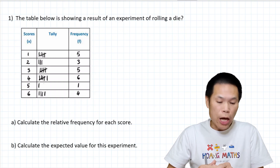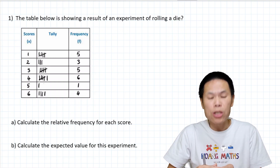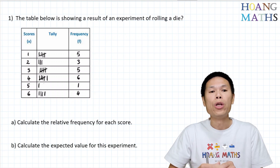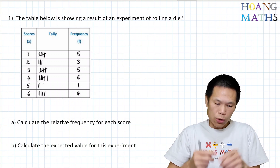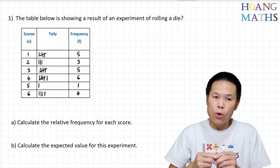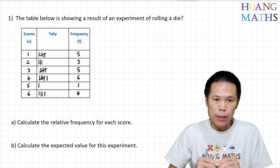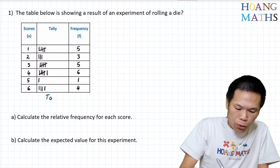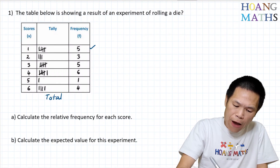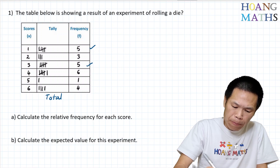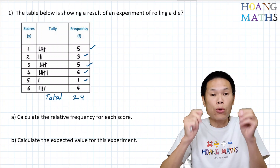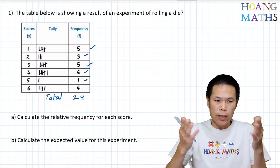First one. The table below is showing a result of an experiment of rolling a die. Part I: Calculate the relative frequency for each score. To work out the relative frequency, we use the frequency of the score over the total frequency. Let's work out the total frequency first. So the total is 5 plus 5 is 10, and 3 plus 6 is 9, and 1 is 10, so 24. The total frequency is 24.